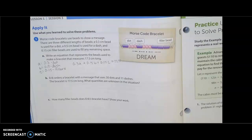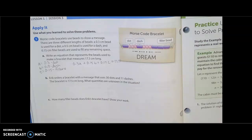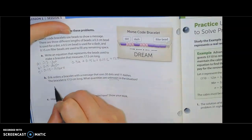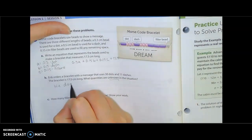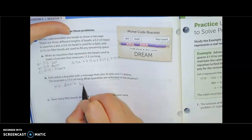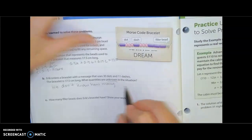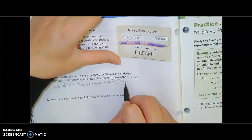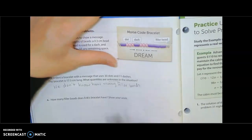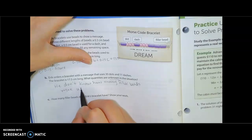Part B says Eric orders a bracelet with the message that uses 30 dots and 10 dashes. The bracelet is 17.5 centimeters long. What quantities are unknown in this situation? Well, we know dots and dashes. The only thing we don't know is filler. So the unknown is filler. We don't know how many filler beads were used.